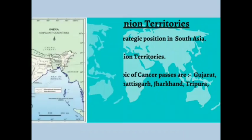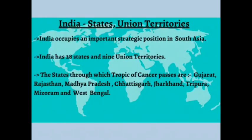At present India has 28 states and 9 union territories. The Tropic of Cancer passes through the middle of India, and the eight states it passes through are: Gujarat, Rajasthan, Madhya Pradesh, Chhattisgarh, Jharkhand, West Bengal, Tripura, and Mizoram.